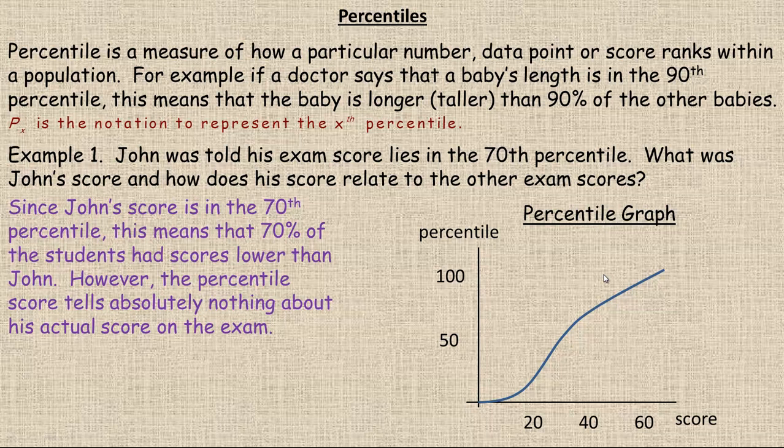If we had a percentile graph of those group of students, then the way you could find his score is this. You could say, well, okay, so 70th percentile is here, partway between 50 and 100. And we could go across here and then down, so his score would be around 40. Now, 40, that doesn't mean 40%. Perhaps a max score is 60 or something like that. But that would just, whatever that number is, that's what his score would be. But you would only be able to determine that if you had a percentile graph.